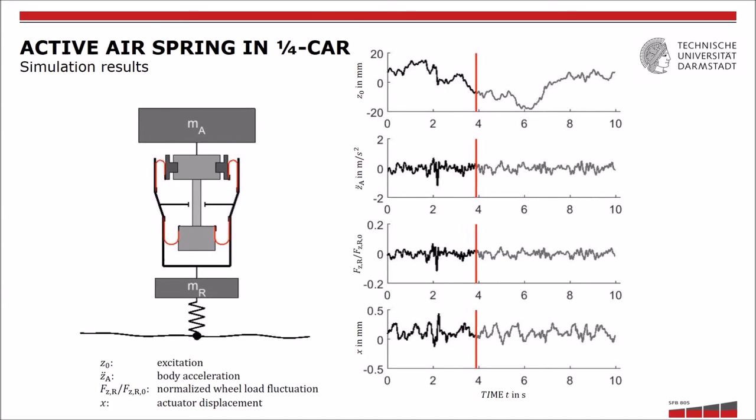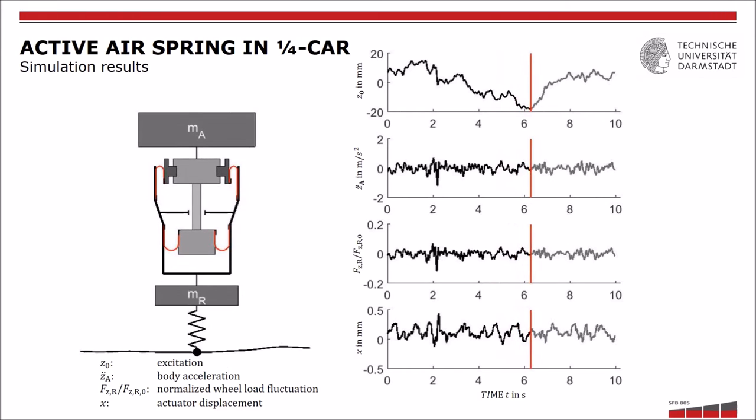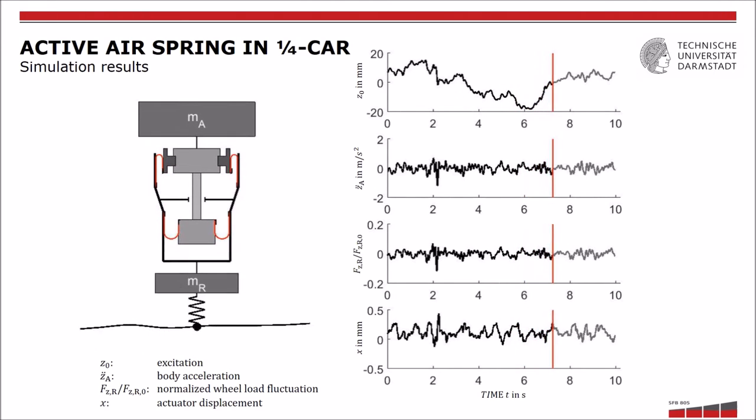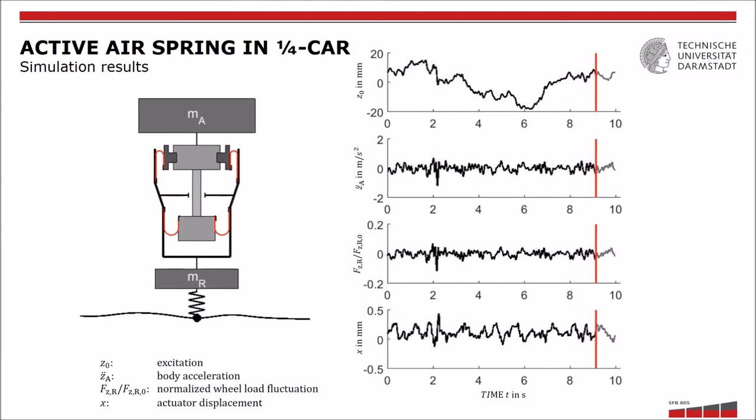This quarter car model is a two mass oscillating system with a base excitation which can be generated, for example, by a road profile. This simple model is a good approach to examine the vertical dynamics of a vehicle.